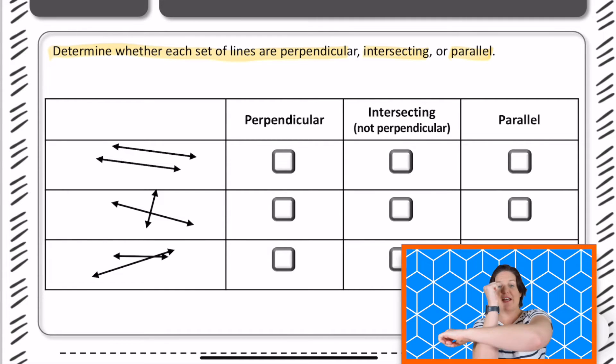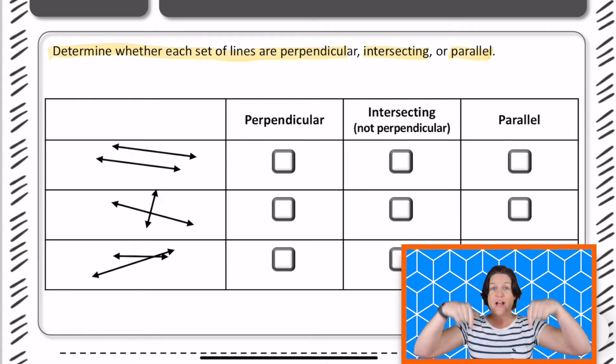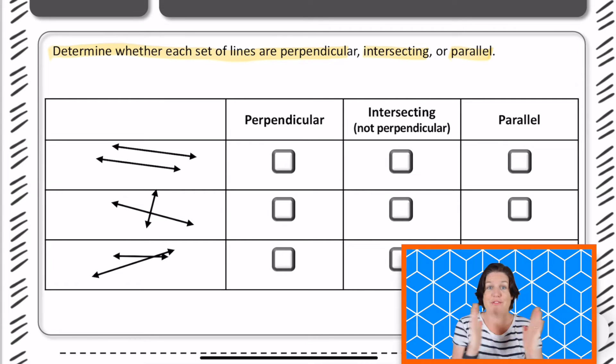Perpendicular, that means that we have lines that are intersecting and they're forming right angles. Intersecting just means that they're crossing somewhere. And parallel means that they are lines that will never ever cross. They can go on and on in both directions and they will never ever cross. So let's go ahead and take a look at it.